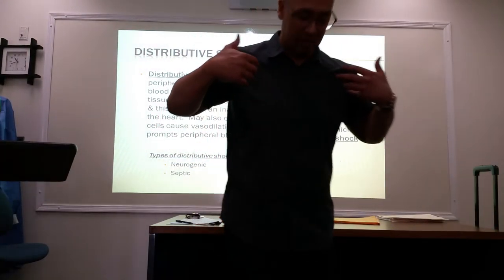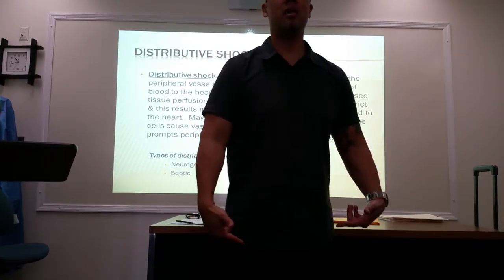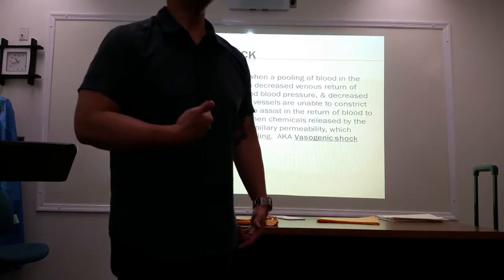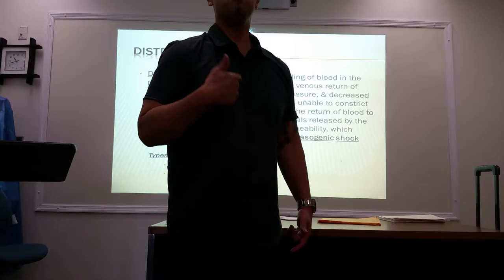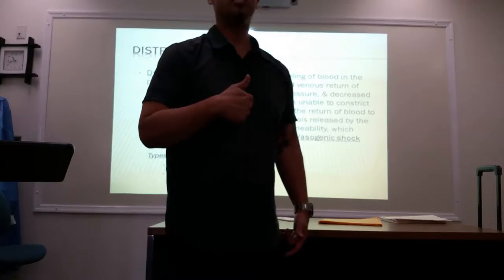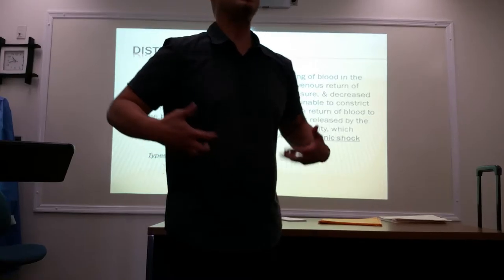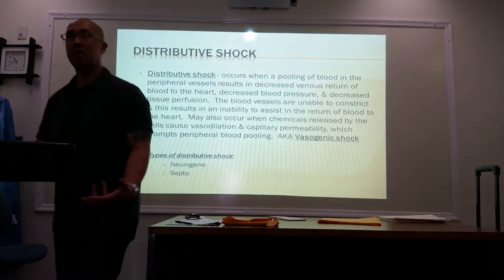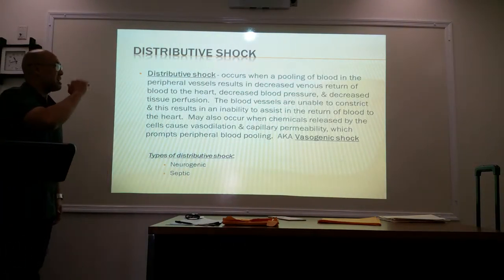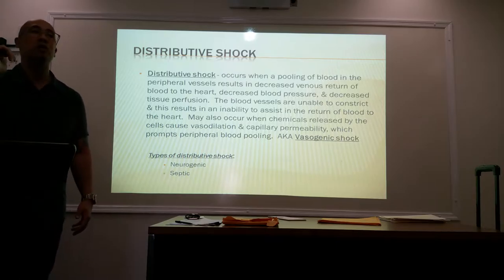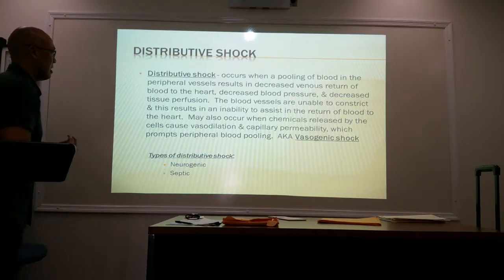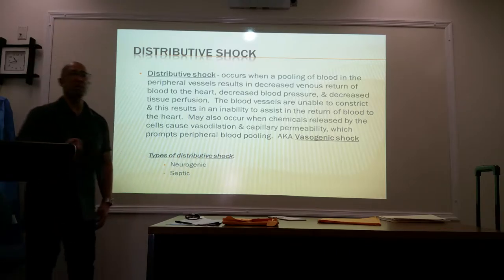When your blood pressure drops, blood that has gone to your lower extremities — which are further from your heart and have a longer way to travel — isn't strong enough to return back to your heart, so it pools in your extremities. This is distributive shock, also known as vasogenic shock.